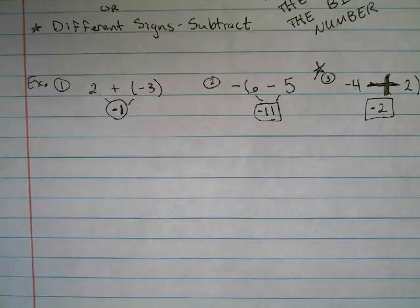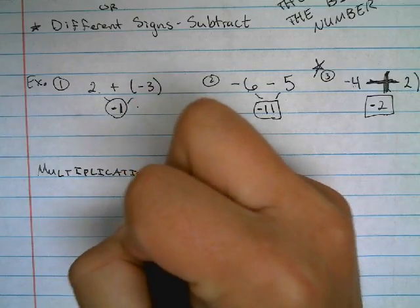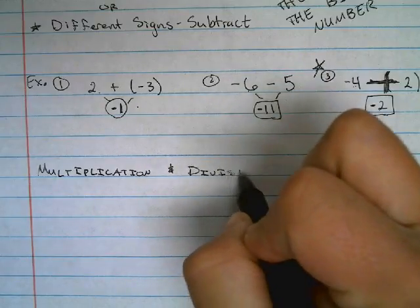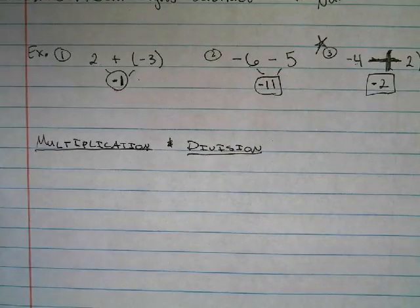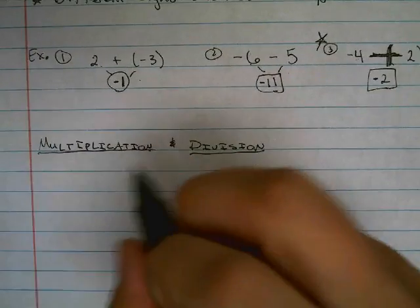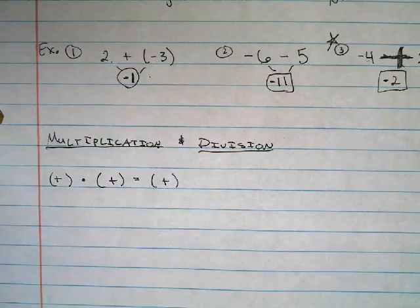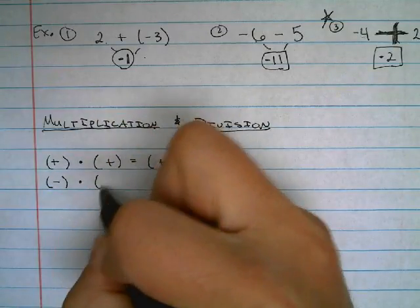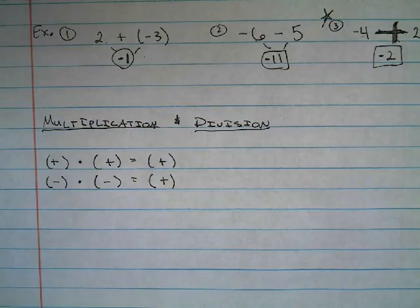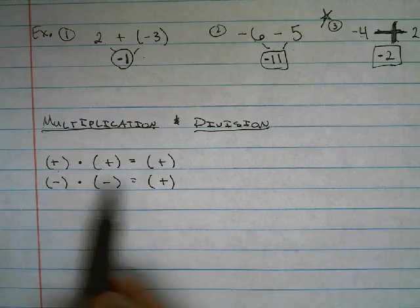Next we'll have multiplication and division. For multiplication: positive times a positive equals a positive, and negative times a negative also equals a positive. So when the signs are the same, the answer will be positive.